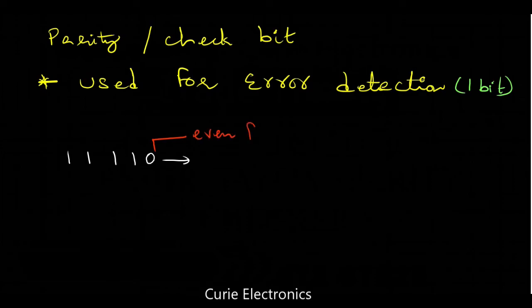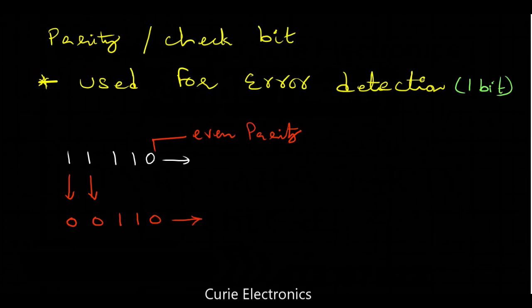Now what happens when the data is transmitted through the medium — due to some noise, the first two ones got changed to zero. The remaining data remains the same. Two bits are changed and we cannot detect the error. So this is the drawback of parity bit checking.